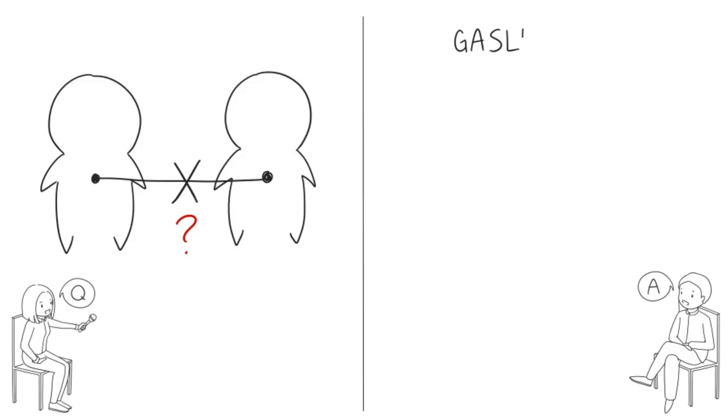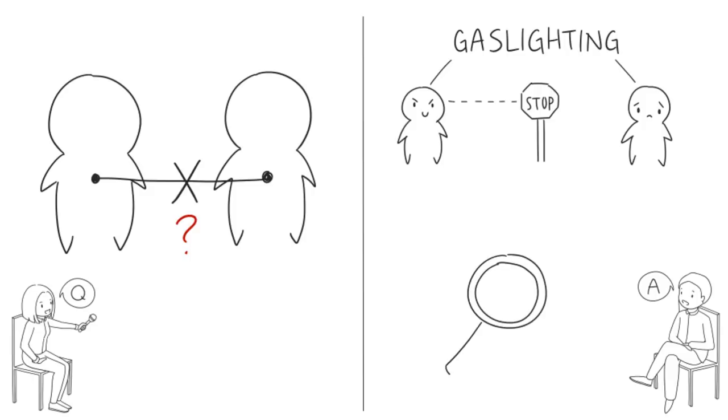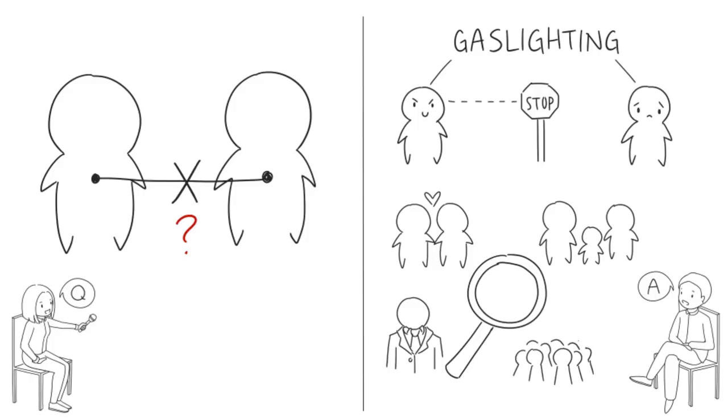It takes two people for gaslighting to work, the gaslighter and the victim. As soon as the victim decides she or he will no longer accept the ill treatment, the process of change begins. This is sometimes easier said than done because of the codependent factor, but it is definitely doable. It often takes critical astuteness to spot and protect oneself from gaslighting, be it in a romantic or family relationship, at the workplace or in society at large.